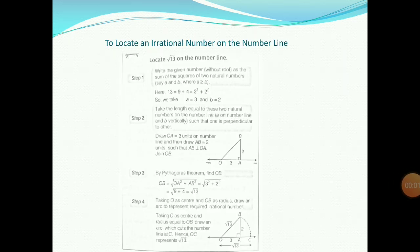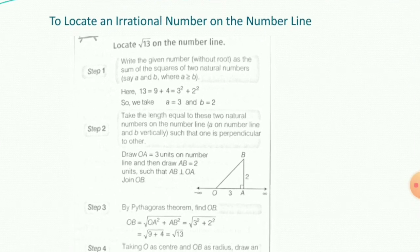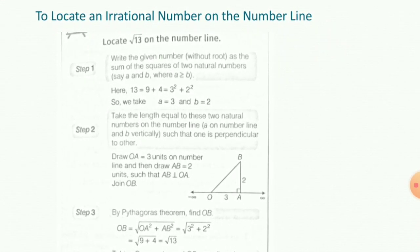Now let us discuss how to locate an irrational number on the number line. In your previous classes, you have studied how to represent root 2 or root 5 on the number line. Now I will explain how to locate root 13 on the number line. Step 1: write the given natural number as the sum of squares of two natural numbers, say A and B. Here, 13 is equal to 9 plus 4, that is 3 squared plus 2 squared. So we take A as 3 and B as 2.